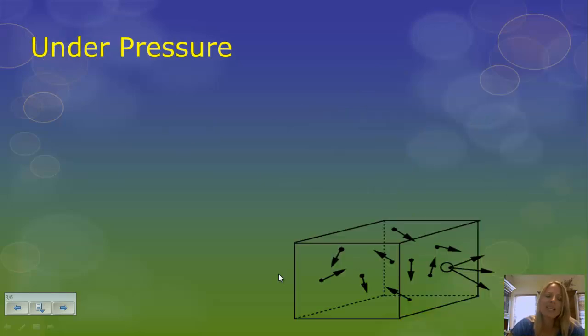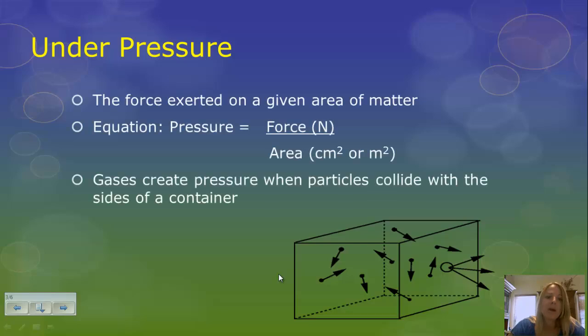So exactly what is pressure? Pressure is the force exerted on a given area of matter. And in order to calculate pressure, pressure is force in newtons over area, which is centimeters squared or meters squared. So in terms of gases, gases are creating pressure on us at all times. The pressure is the collisions with the sides of the containers or the collisions with our body.